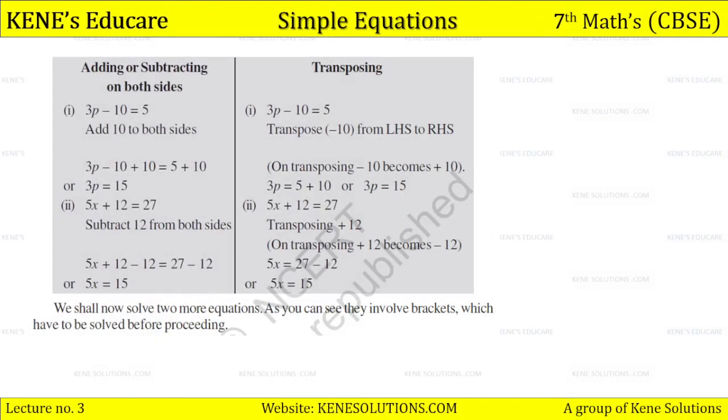Let us take two more examples of transposing. Some examples we'll see. First one here: adding or subtracting on both sides. Like 3p minus 10 equals 5. What do we need? We need to cancel minus 10, so we add 10 to both sides. Plus 10 minus 10 cancel, so 3p equals 15. But look here at transposing: we transpose minus 10 from LHS to RHS. On transposing, minus 10 becomes positive 10, so 3p equals 5 plus 10, and our answer is 3p equals 15.